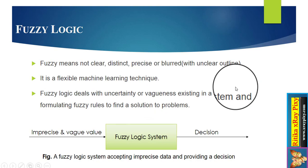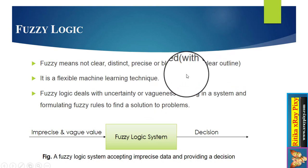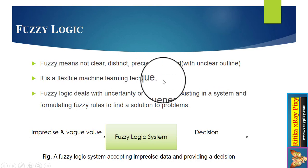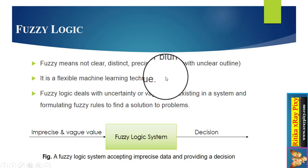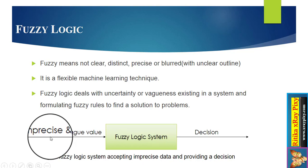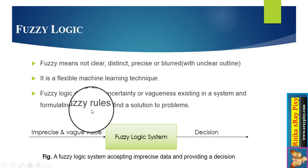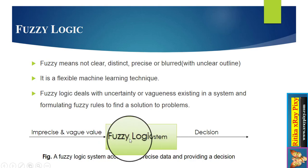Next is fuzzy logic. Fuzzy means something which is not clear — that is, unclear, indistinct, or imprecise. It is also a flexible machine learning technique we use today. We use fuzzy logic to deal with imprecise data existing in the system, and we use different fuzzy rules to find solutions to complex problems.